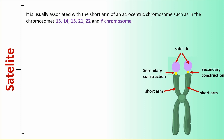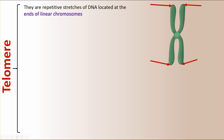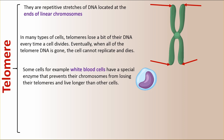The satellite is usually associated with the short arm of an acrocentric chromosome, such as chromosomes 13, 14, 15, 21, 22, and the Y chromosome. These are called satellite chromosomes, and the satellite at metaphase appears to be attached to the chromosome by secondary constrictions. Telomeres are repetitive stretches of DNA located at the ends of linear chromosomes. In many types of cells, telomeres lose a bit of their DNA every time a cell divides. Eventually, when all the telomere DNA is gone, the cell cannot replicate and dies. Some cells, for example white blood cells, have a special enzyme that prevents the chromosomes from losing their telomeres, allowing them to live longer than other cells.